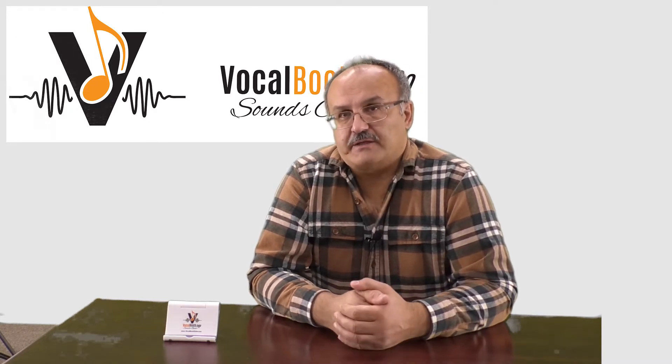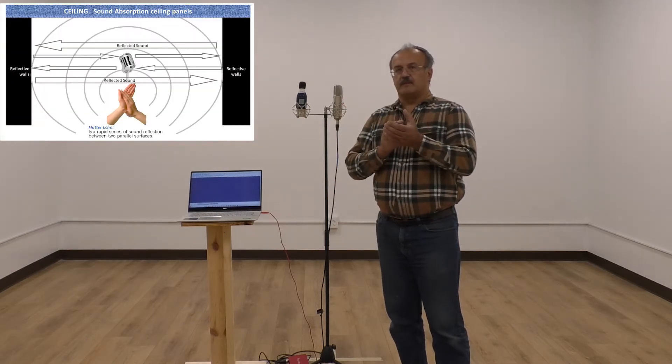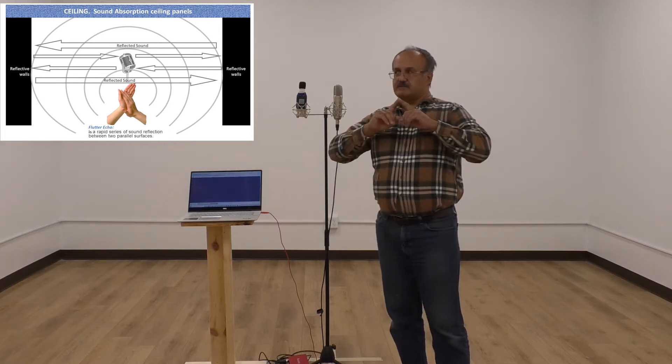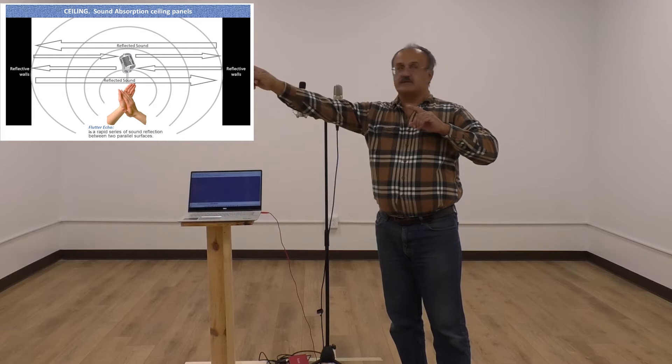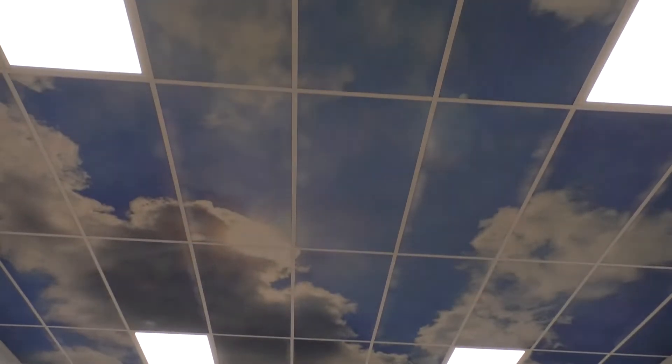Now we're going to show you how easily you can get rid of Flutter Echo using producer choice acoustic blankets. We have these bare walls and you can hear the Flutter Echo if you do this. That sound — if you hear that, it's because the sound reflects from one wall, goes back and forth, and that's what Flutter Echo is. It doesn't reflect from the ceiling anymore, but it does reflect from the parallel walls.